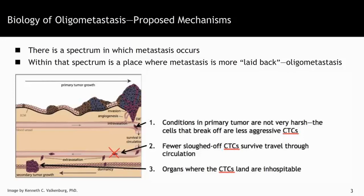The second proposed mechanism is that there are fewer sloughed-off circulating tumor cells, they're less aggressive, so fewer of them will survive in circulation. The third proposed mechanism is that in oligometastasis, when the circulating tumor cells do go to a new organ, they may find that the new organ is not very hospitable to them — they're not able to thrive, as compared to other forms of metastasis where the organ is more receptive and allows the circulating tumor cell to become a disseminated tumor cell.